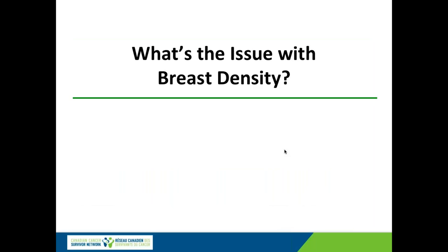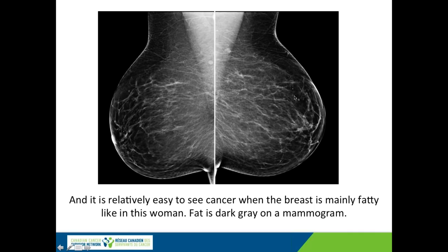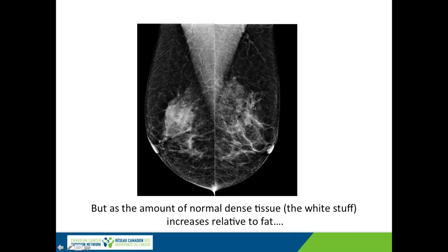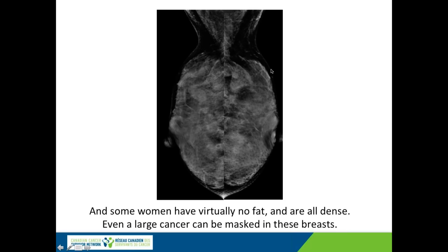Let's talk about breast density. We are pretty good at recognizing cancer on a mammogram when it's visible. It's relatively easy to see cancer when the breast is mainly fatty — fat is dark grey, cancers are white. As the amount of normal breast tissue increases relative to fat, it becomes harder to see on mammograms. This is called a heterogeneously dense breast. That's why we say that when women have dense breasts, it's like trying to find a snowball in a snowstorm. Some women have virtually no fat and are completely dense, and even a large cancer could be missed in this kind of dense breast.